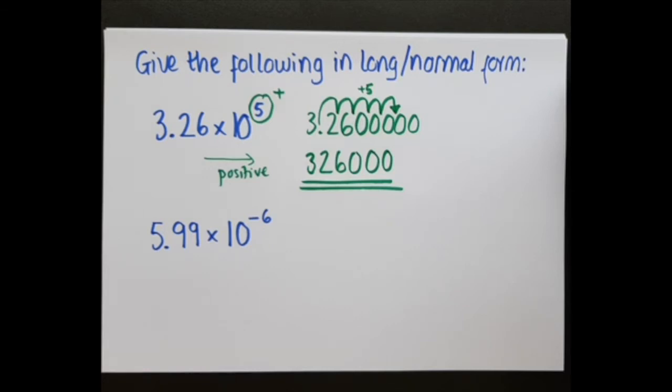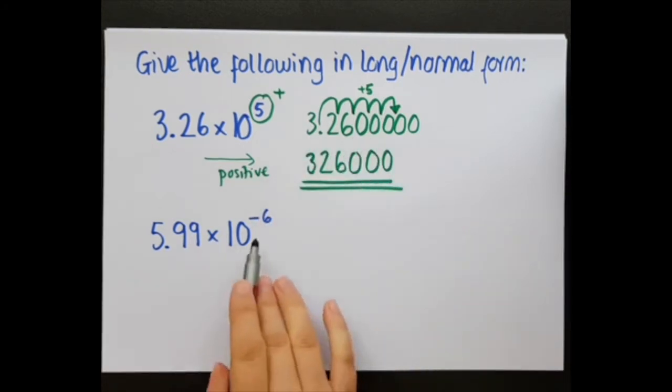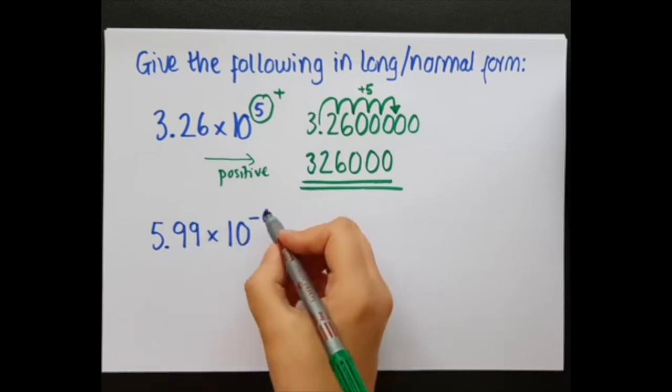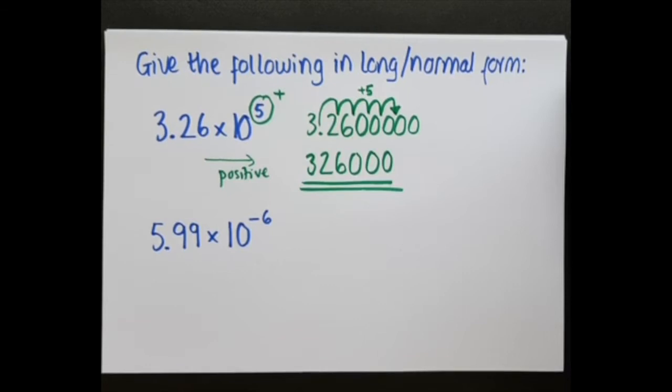Now we can also do this for small numbers. So standard form is used for small numbers and we can take standard form and make it small. So in this top one, I added some numbers to the right hand side. For small numbers, so numbers that are to the negative power, I'm going to add some zeros to the front.